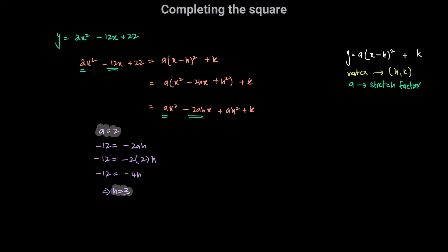Now we found a and h. The constant term on the left-hand side is 22, and on the right-hand side it is ah squared plus k. So 22 equals a times h squared plus k. With a equal to 2 and h equal to 3, we get 2 times 3 squared plus k equals 22, so k equals 22 minus 18, which is equal to 4.